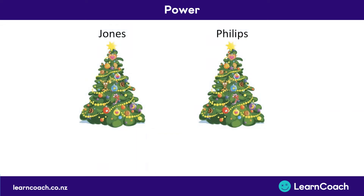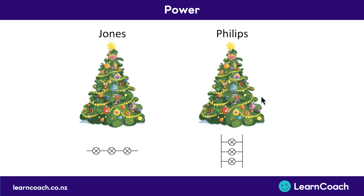In this video we're going to look at power and the two different types of circuits we've been looking at, series and parallel, and what the difference is when we're looking at power. To start with, let's look at two different Christmas trees. On the left we have the Joneses Christmas tree, set up with series lights. On the right we have the Phillips Christmas tree, and the Phillips have set their Christmas tree lights up in parallel. We're going to see what the difference would be between the two Christmas trees and their lights.